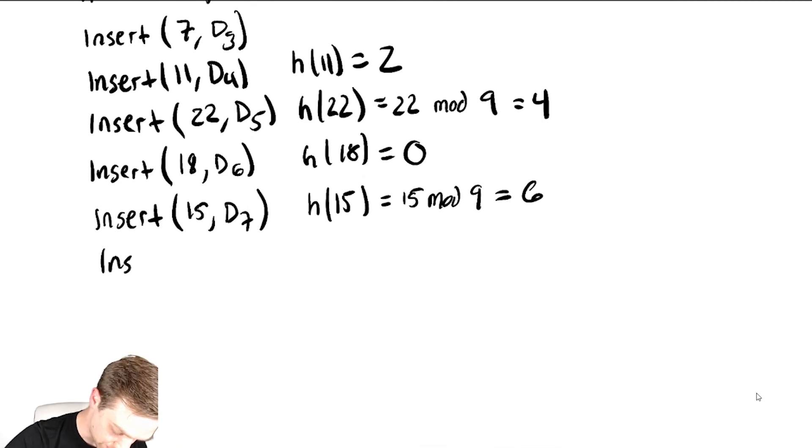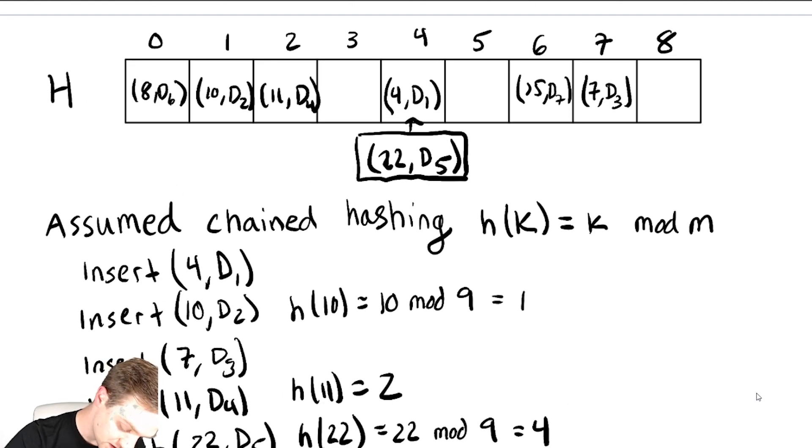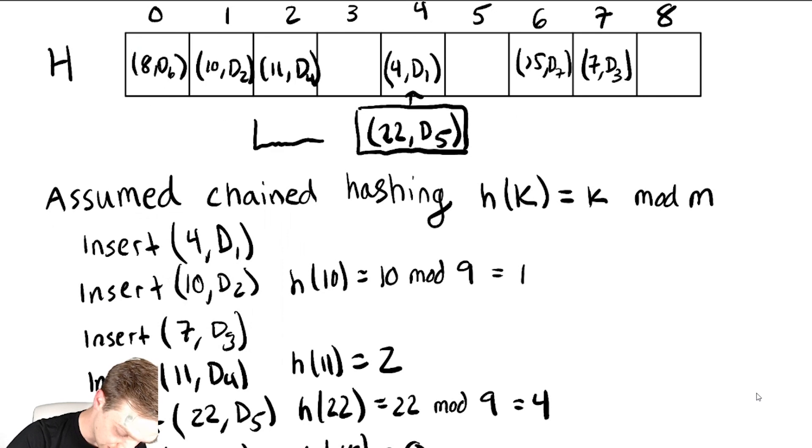Let's say we did an insert with 2, d8. h of 2 is 2. And if I look up I get another collision now, so my 2, d8 needs to go below here.